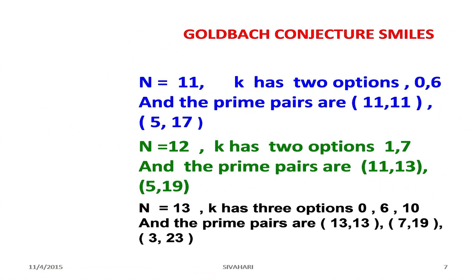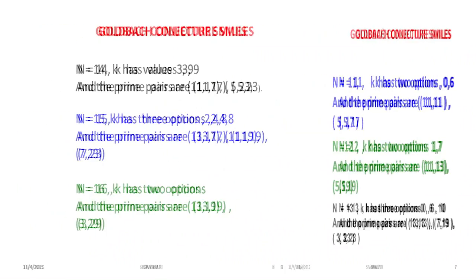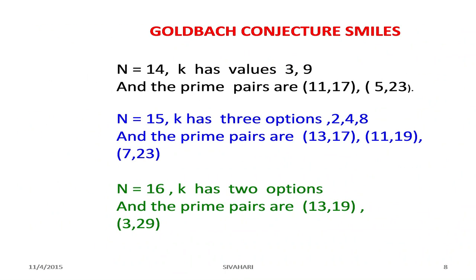n equals 11: k has two options, 0 and 6, giving prime pairs (11, 11) and (5, 17). n equals 12: k has two options, 1 and 7, giving pairs (11, 13) and (5, 19). n equals 13: k has three options, 0, 6, and 10, giving prime pairs (13, 13), (7, 19), and (3, 23). n equals 14: k has values 3 and 9, giving prime pairs (11, 17) and (5, 23).